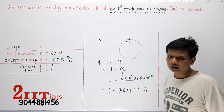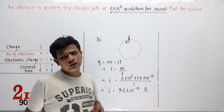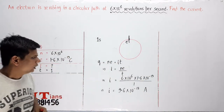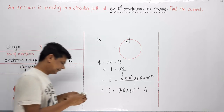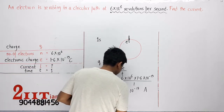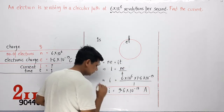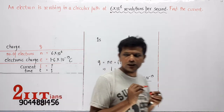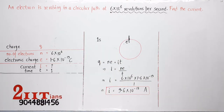क्योंकि अकेला ही electron है, इसलिए current काफी छोटी है — 9.6 × 10⁻¹³ A। Copy कर लीजिए अच्छे से। ऐसा ही एक और सवाल आएगा जो आप solve कर सकते हैं।